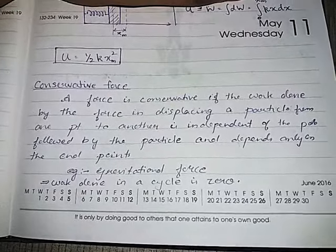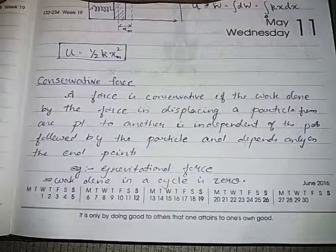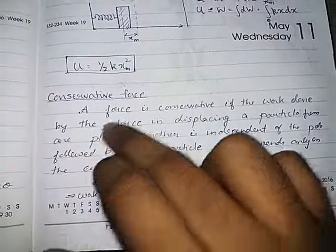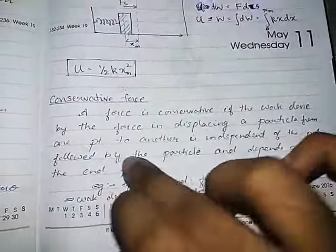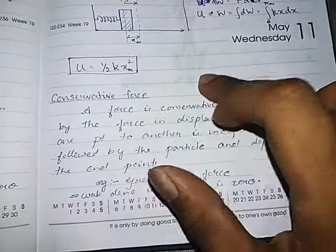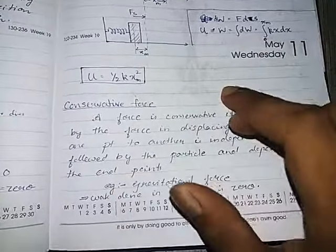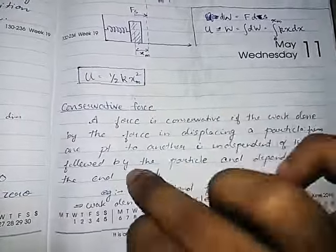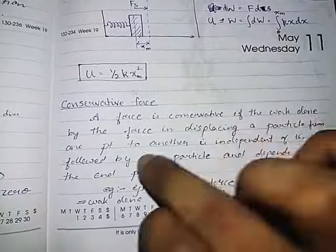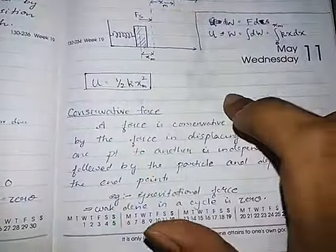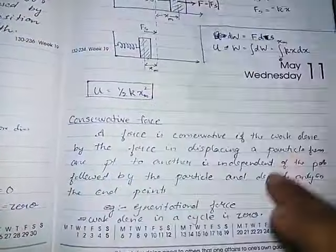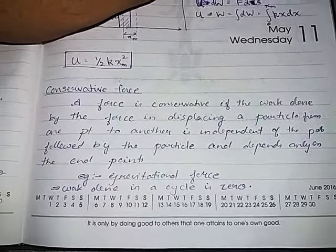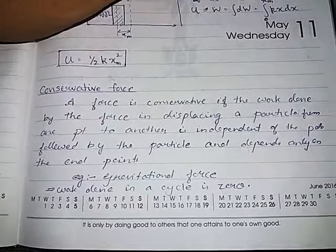It's independent of the path. This is also just like friction — if it's pushed, you can move and move. Light is going to work on other paths; this path depends on the path, so it's not going to be a conservative force.